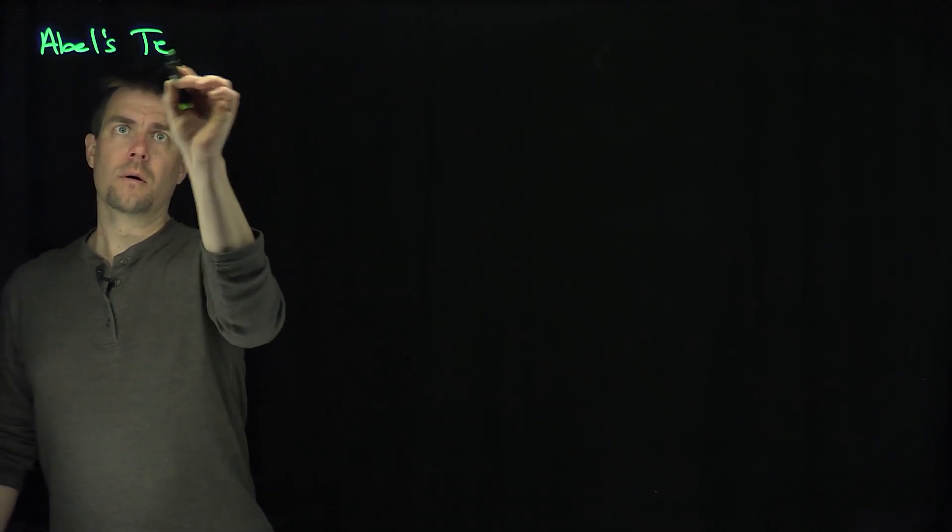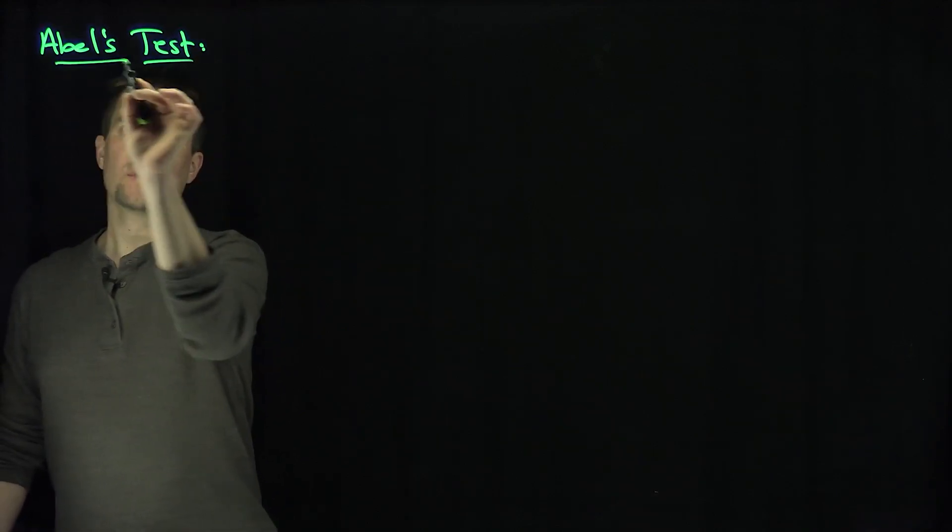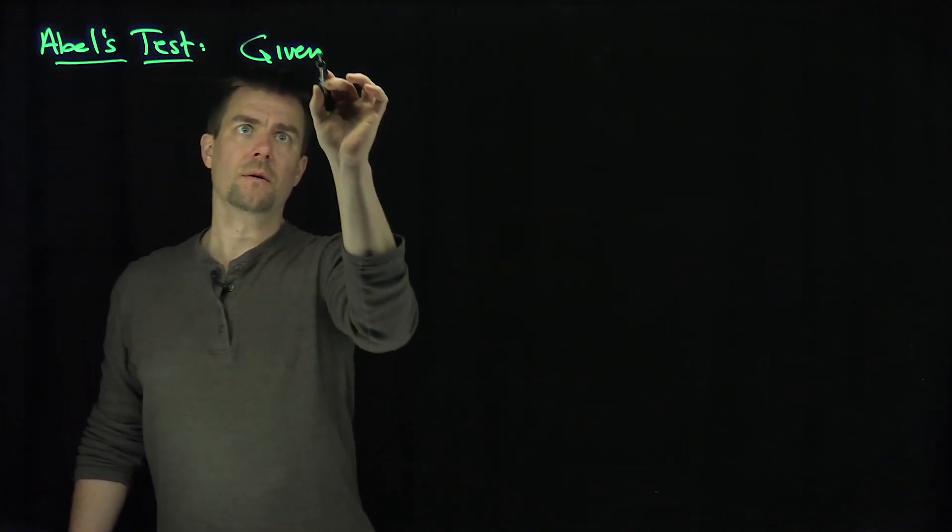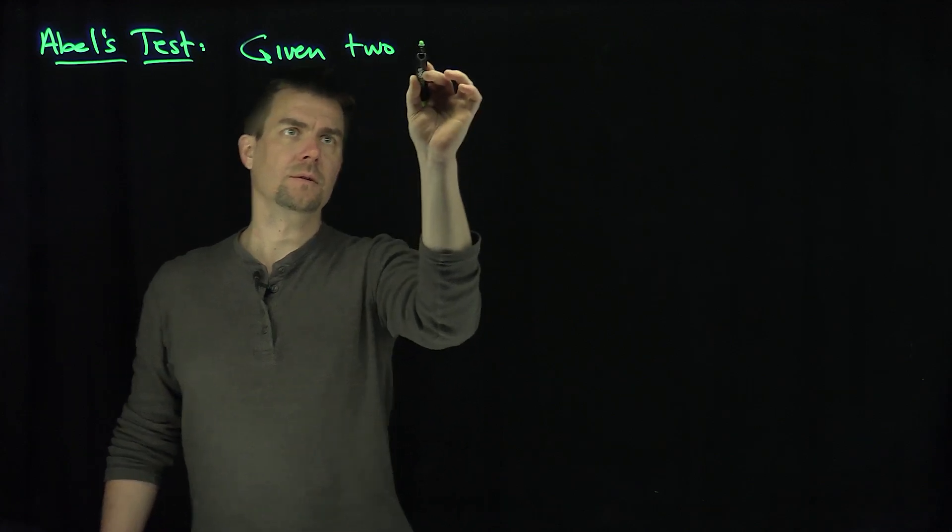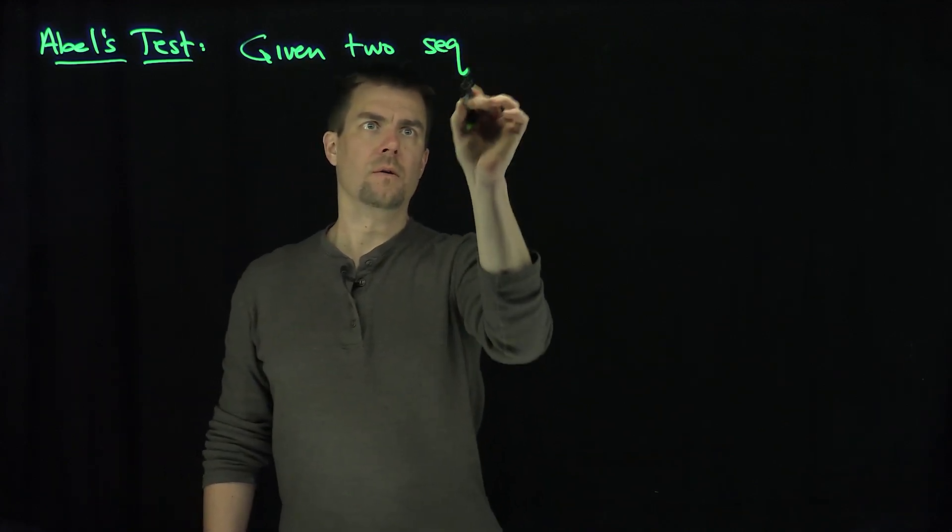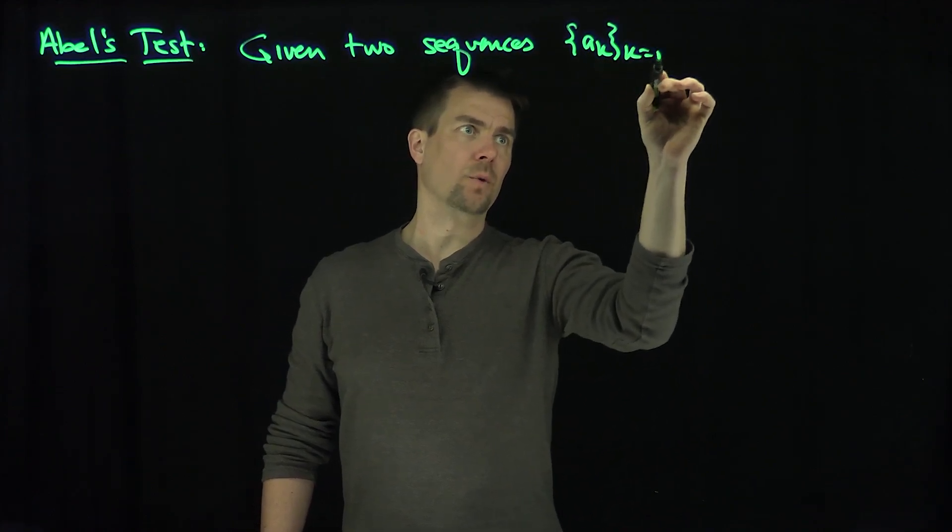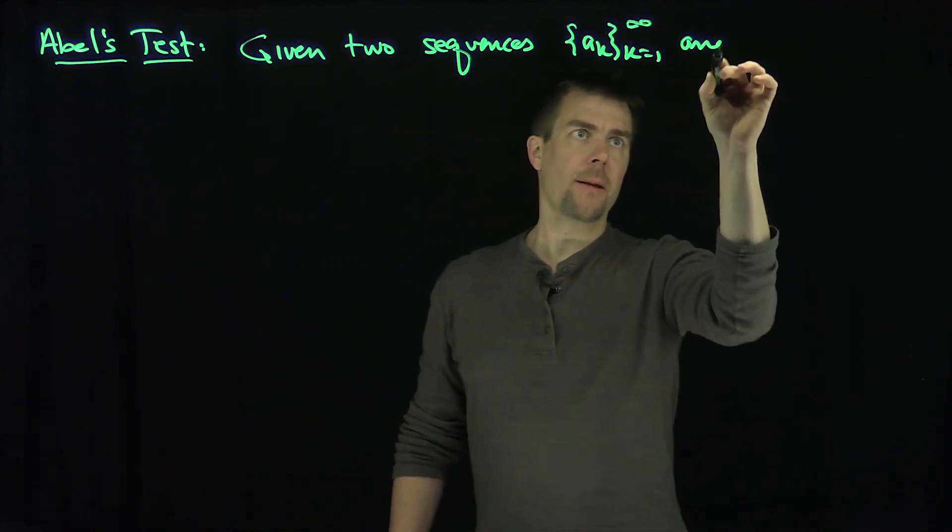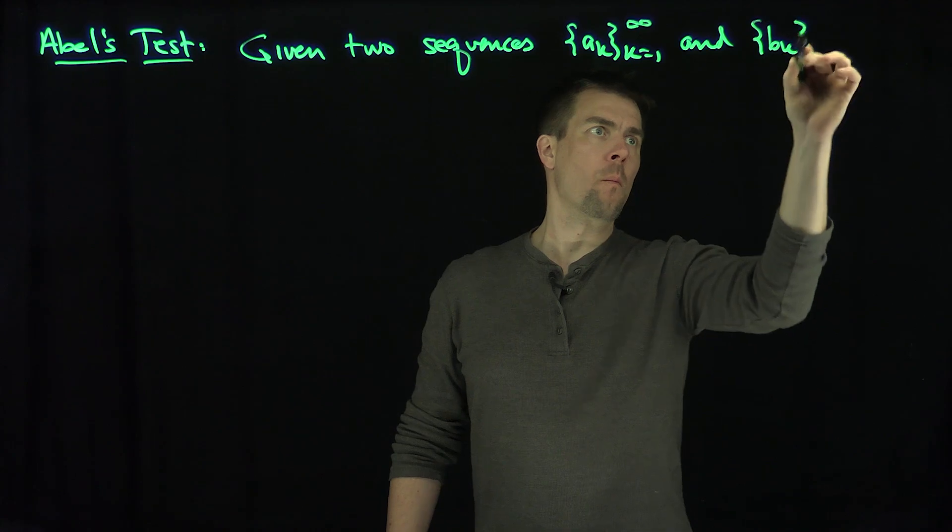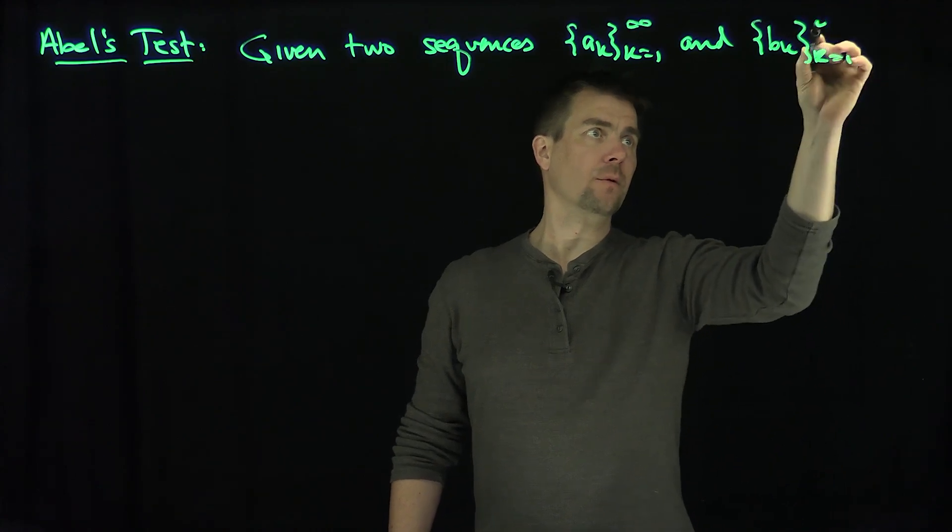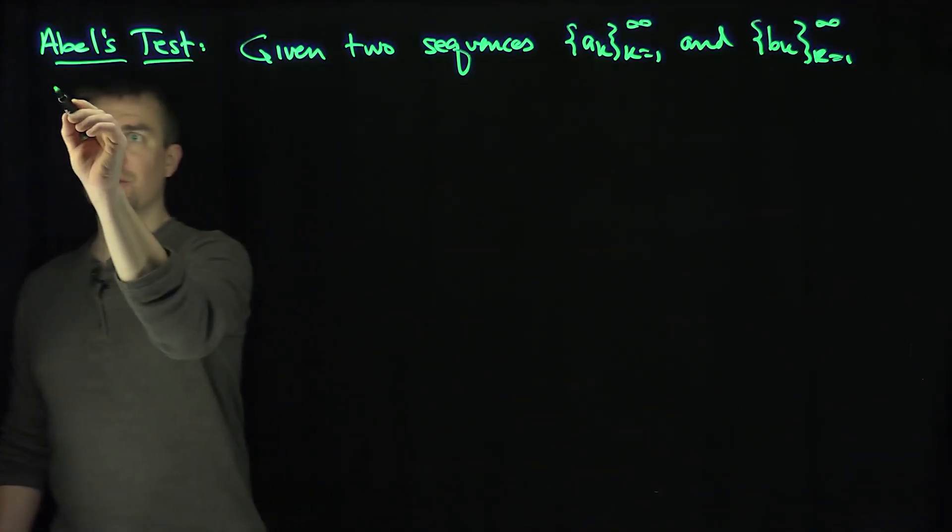Abel's test is the following. Given two sequences: a_k, k equals one to infinity, and b_k, k equals one to infinity, such that two conditions are true.